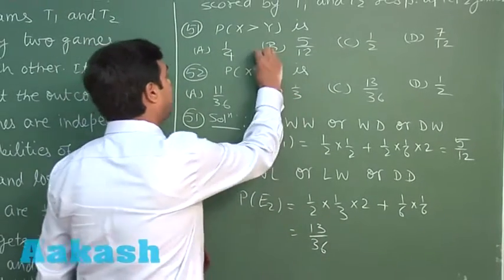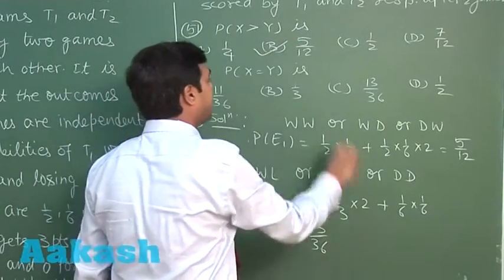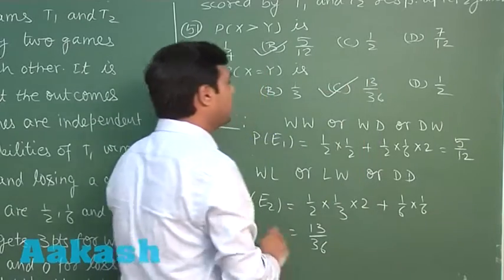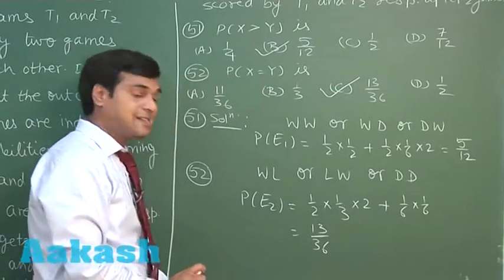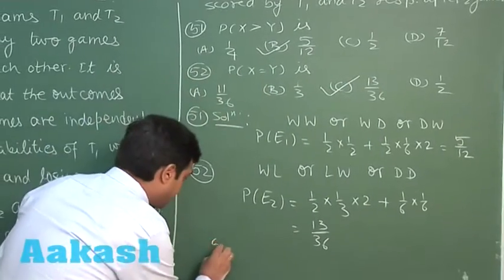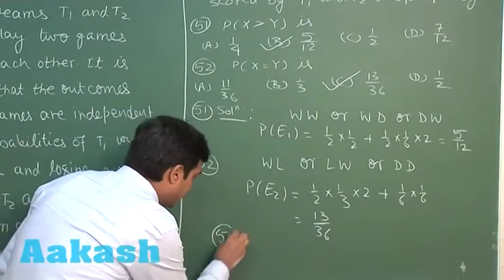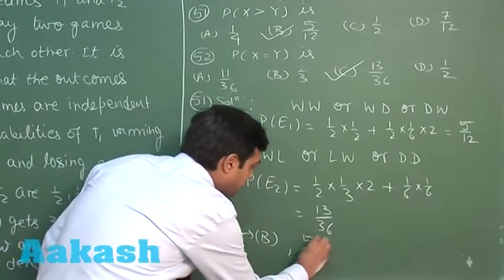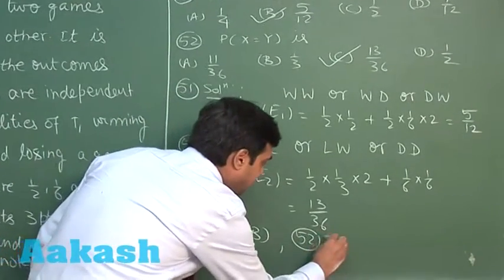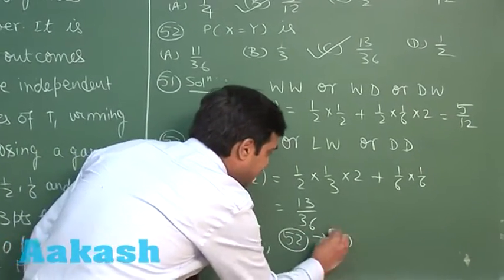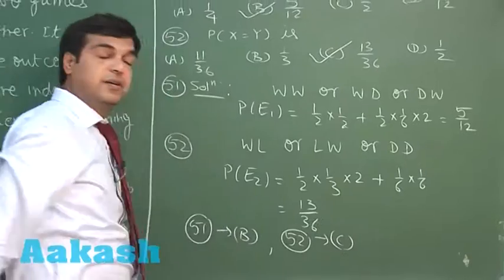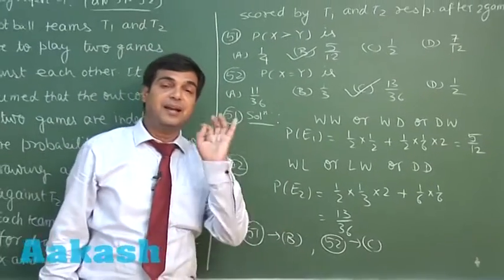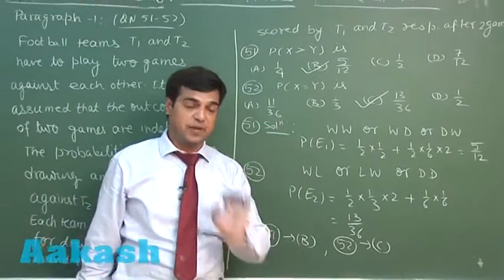From the options we can clearly see: for question 51, B is correct, and for question 52, C is correct. Question number 51 answer is B, question number 52 answer is C. This is clear. Let's move to the next one.